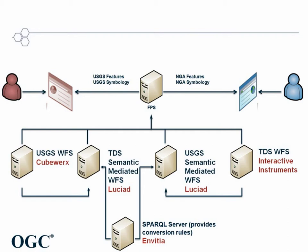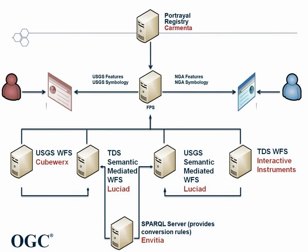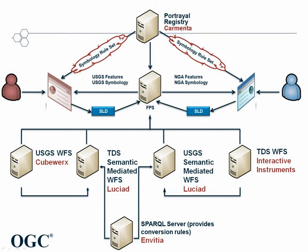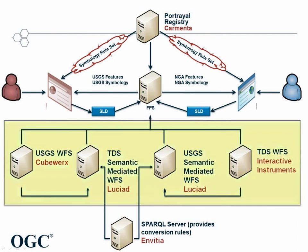All features require a symbology definition to be rendered. In this scenario, the symbology is stored in a portrayal registry, which can provide a symbology rule set for an identified feature type based on the feature type's namespace. Rule sets are identified by clients and used to define styled layer descriptors, or SLDs. SLDs are consumed by a feature portrayal service to render map images. The two analysts have access to data stored in four Web Feature Services, or WFSs.